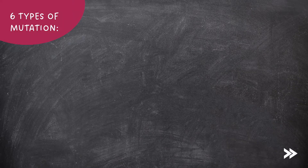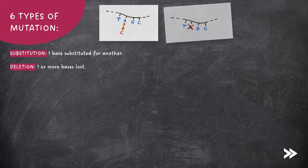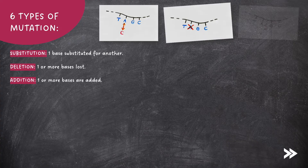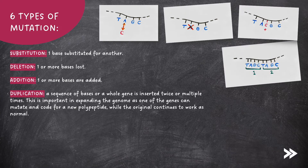There are six types of mutation. In a substitution mutation, one base is substituted for another. In deletion mutations, one or more bases are lost. In addition mutations, one or more bases are added. In duplication mutations, a sequence of bases or a whole gene is inserted twice or multiple times. This is important in expanding the genome, as one of the genes can mutate and code for a new polypeptide, while the original continues to work as normal.